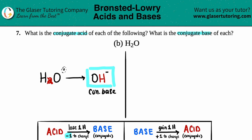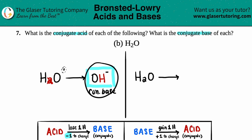Now we do the same idea, but treat H2O as a base to get the conjugate acid. By the way, conjugate just means corresponding in chemistry. With acids and bases, you'll always find a conjugate acid or base, and the conjugate will always be on the product side. If we're treating this as a base, to make an acid you're always going to be one hydrogen more.